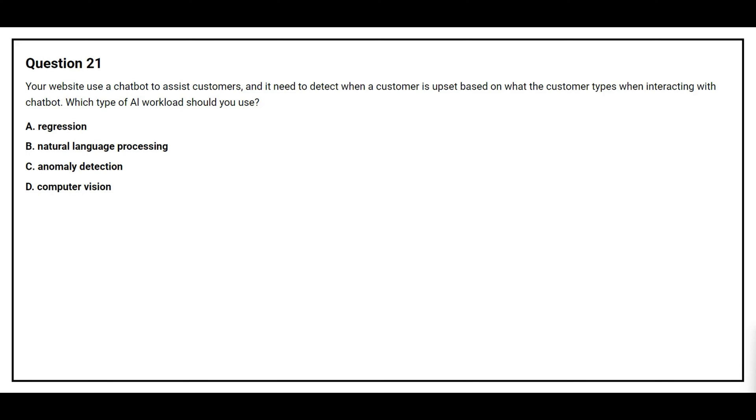Question number 21. Your website uses a chatbot to assist customers and it needs to detect when the customer is upset based on what the customer types when interacting with the chatbot. Which type of AI workload should you use? Option A, regression. Option B, natural language processing. Option C, anomaly detection. Option D, computer vision.